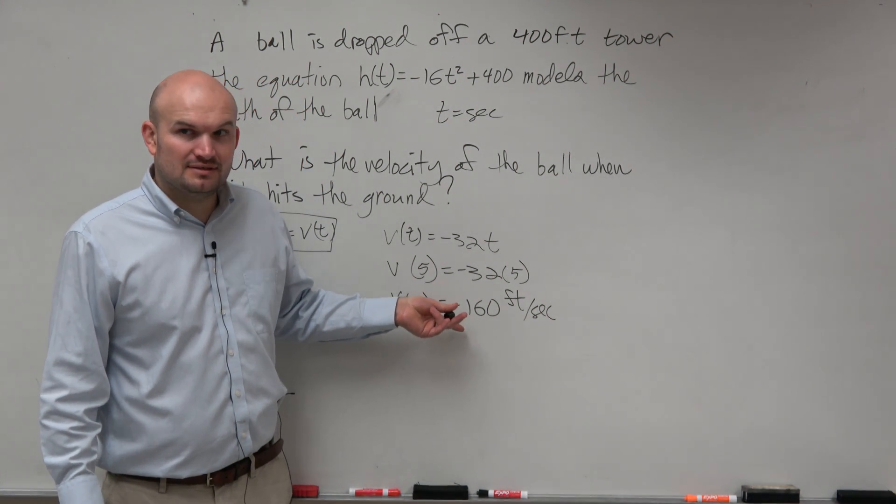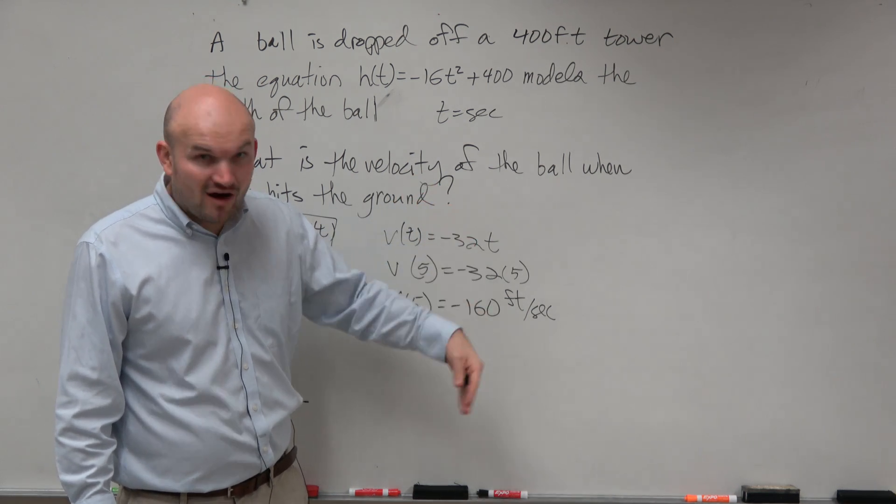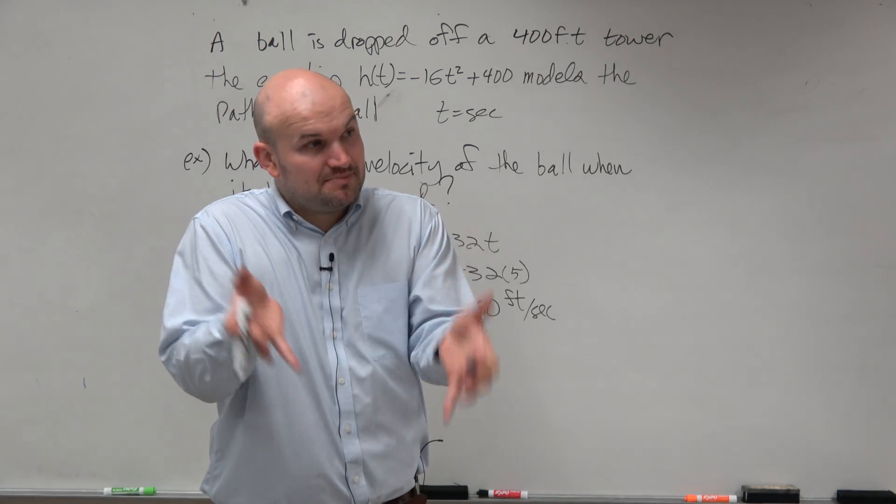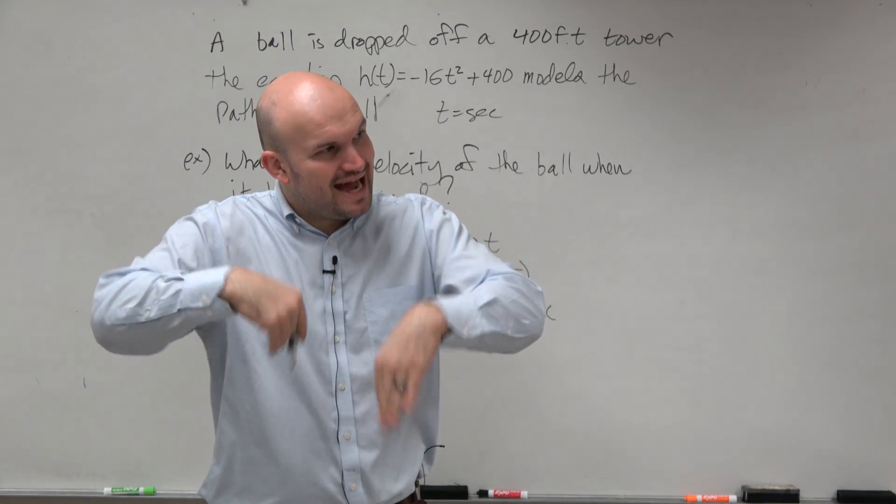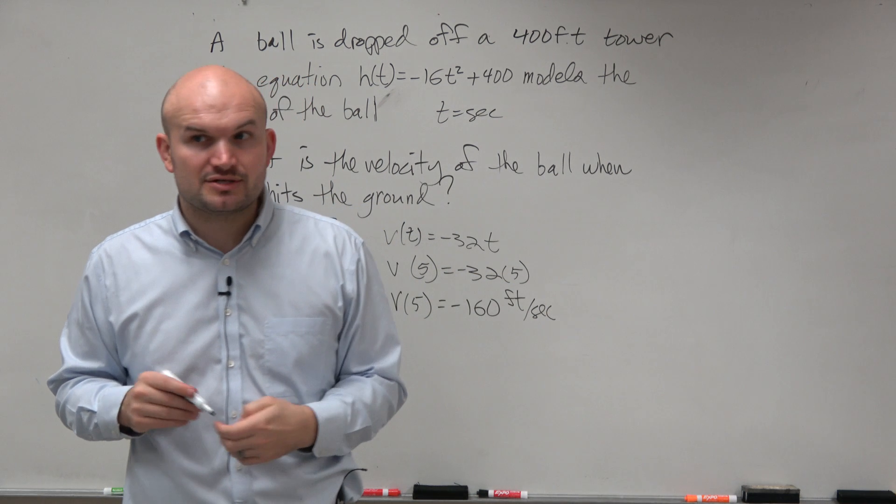And then the other thing that's important for us to look at is it's negative. Does that make sense in the context of the problem? Yeah, because it is falling, right? Velocity is speed and direction. We're going down. Direction is negative. So it makes sense that the ball is falling—it's going down in a negative direction.